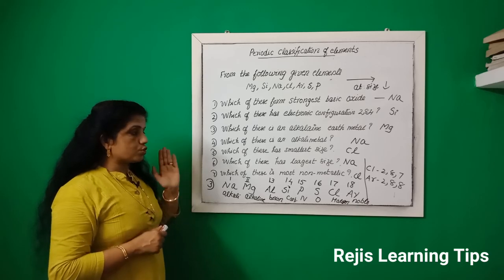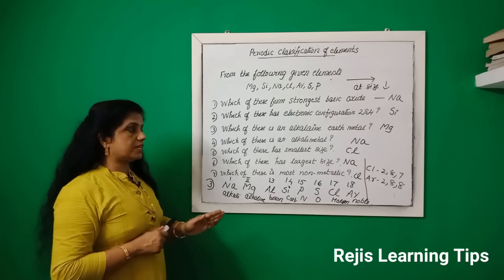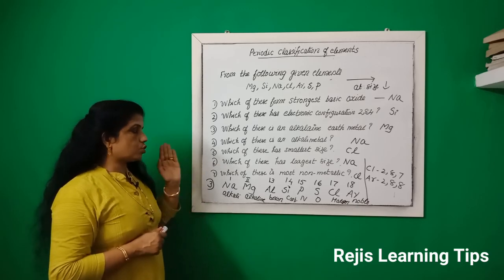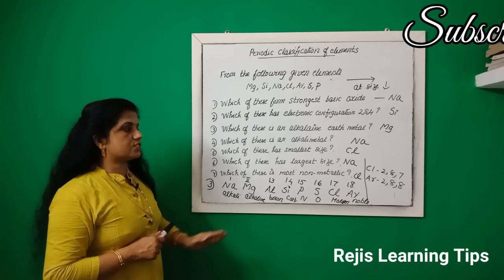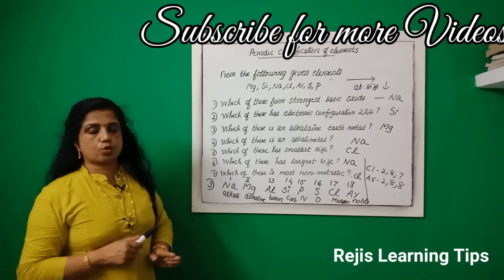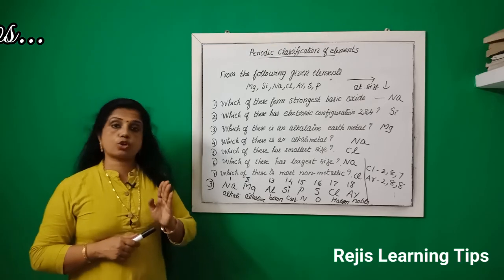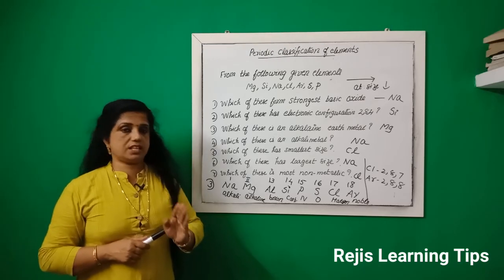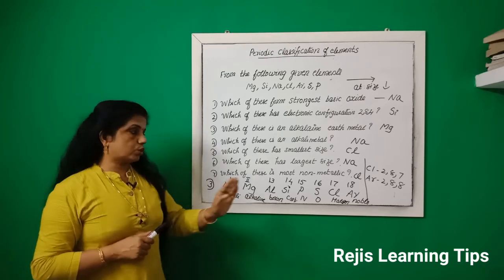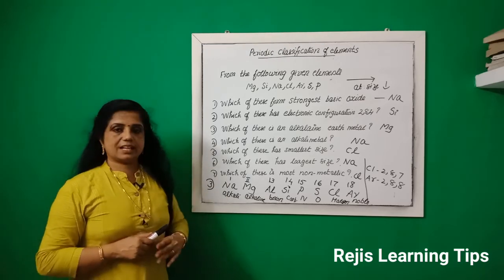Which of these is most non-metallic? That is chlorine. Which of these has the smallest size? That is also chlorine. Both are based on electronegativity. Correct.